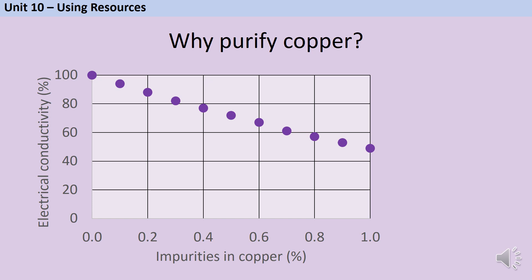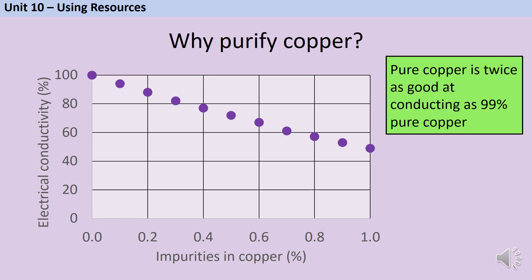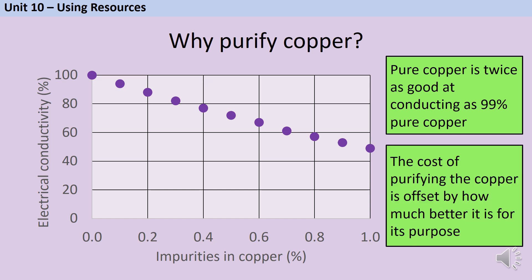Looking at this graph, on the x-axis we have the percentage of impurities in copper - the highest number is 1, so this is copper that is 99% pure. On the y-axis we have electrical conductivity. Comparing completely pure copper to 99% pure copper, the pure copper is twice as good at conducting electricity. So the cost of purifying the copper is offset by how much better it performs. Even though it costs a lot to purify the copper to nearly completely pure, it means we can make more money because it's better at conducting electricity.